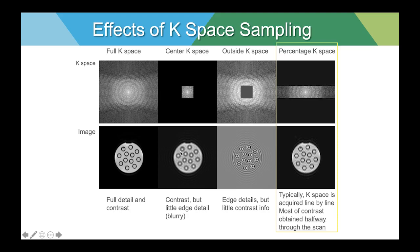However, when using only the center of k-space, our edge detail is terrible — these edges are all fuzzy. If we swap that out and use only the peripheral k-space, we get an image with fairly sharp edges but no contrast information — it's all gray. We need both, of course, to produce a high-quality image. An image made from a segment of k-space gives us fairly decent contrast and edge detail, but it's certainly not the quality of the full image from the full dataset.